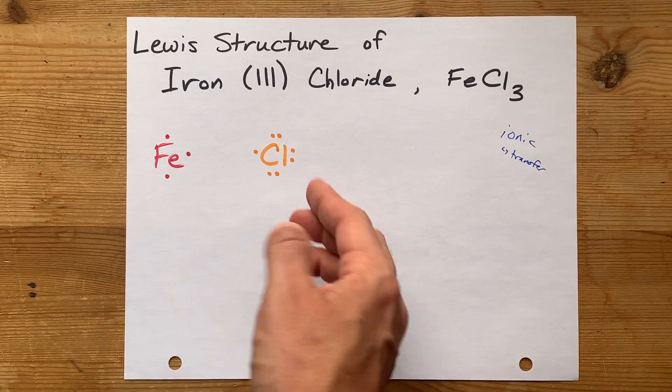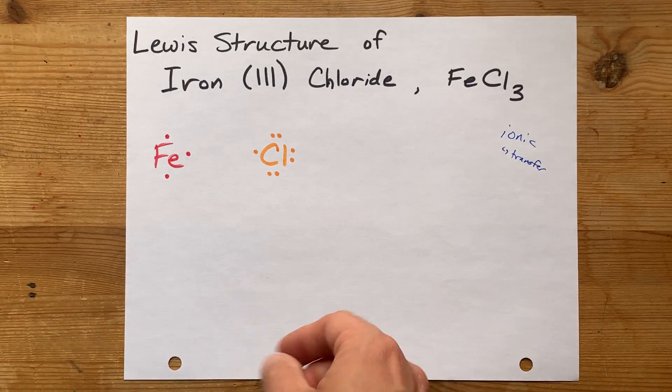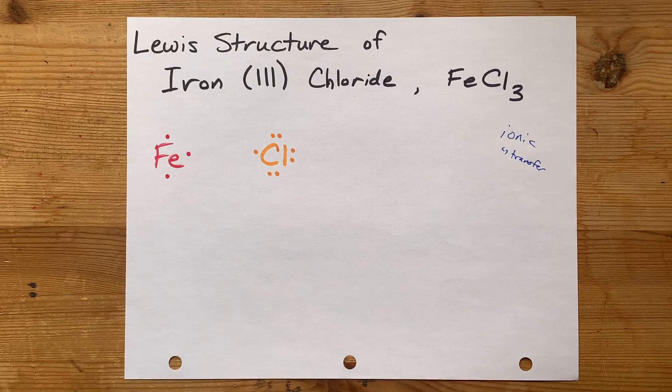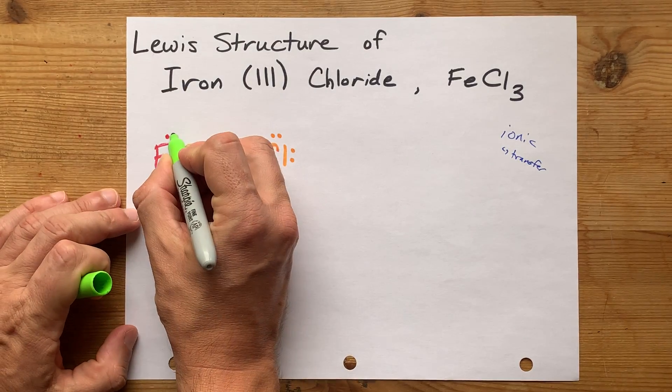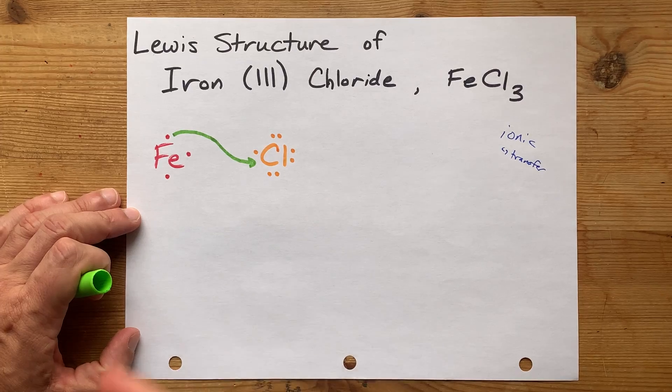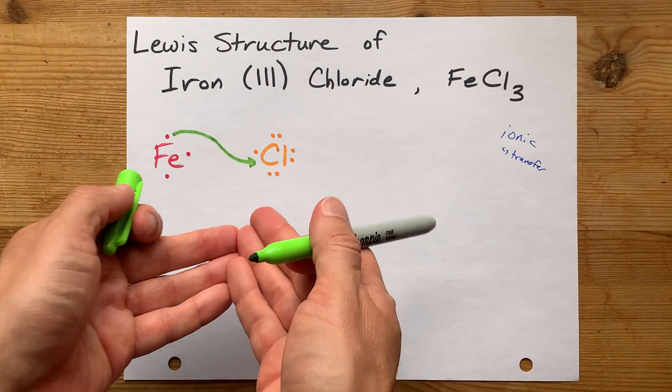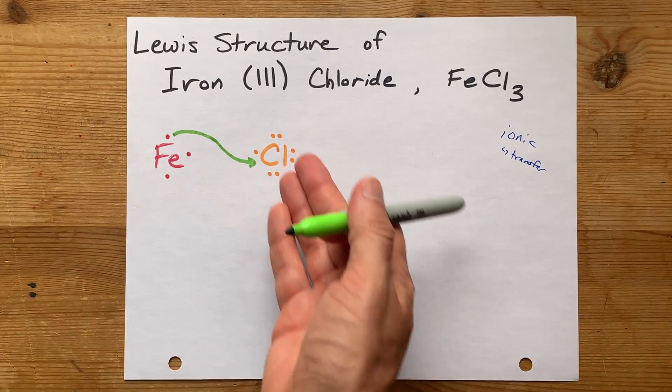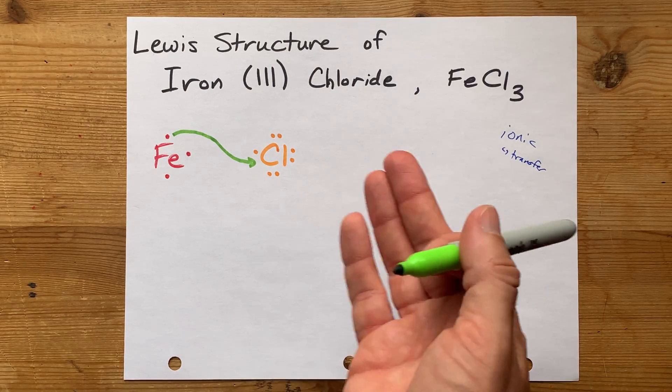Now, chlorine already has 7, and it wants 8. That's the octet rule. So, I want you to draw an arrow from one of the electrons on iron to chlorine. You've completed chlorine's octet. It's now stable.